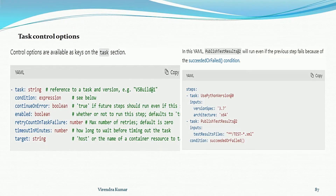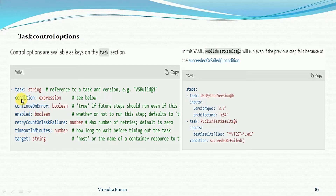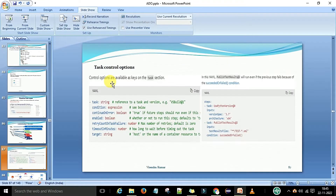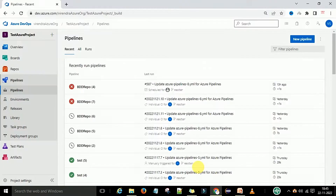Now let's look at task control options — how you can control your task. Using a hyphen-task you can define the reference of the task and the version number. You can also provide conditions like 'continue on error'. These are the properties of the particular task. I think this will be clearer through an example, so I'm going to switch to the editor.